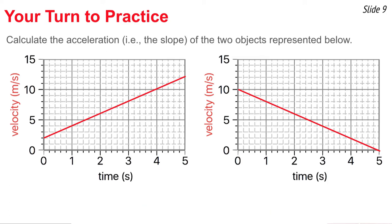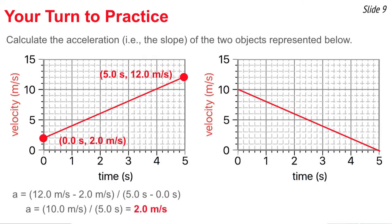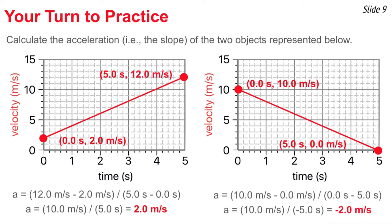For the graph on the left, I picked the first point and the last point, found their coordinates, then plugged the x, y coordinate values into the formula — slope equals change in y divided by change in x. The answer comes out to be 2.0 meters per second per second. For the graph on the right, I did much the same thing: picked the first and last points, used slope equals change in y divided by change in x, or y2 minus y1 divided by x2 minus x1. The result is a slope of negative 2.0 meters per second per second. How did you do?